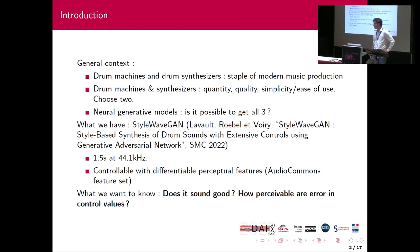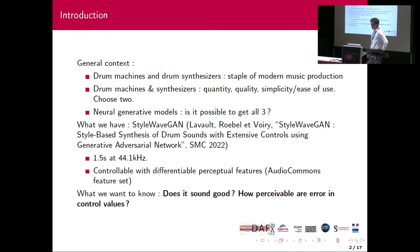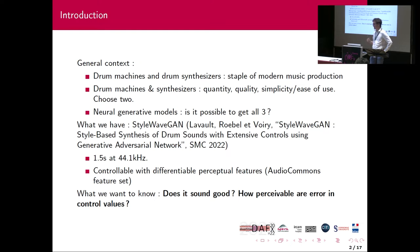In music production nowadays, drum machines, drum synthesizers, and drum sample libraries are quite common and quite useful. However, it's quite hard to get quantity, quality, and something a drummer can use. A drum machine has a limited number of sounds; a drum sample pack has a limited amount of parameters to tweak; and a physical model will have a lot of variety but will be hard to set up. What we aim is to use neural networks to do all three.